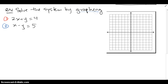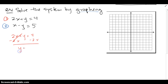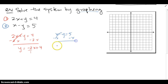Now let's solve the system by graphing. I'm going to graph each equation in y = mx + b (slope-intercept form) by isolating y, because that'll give me an accurate graph. The first equation gives y = -2x + 4, so it has a slope of -2 over 1 and a y-intercept of 4. For the second equation, x - y = 5, I subtract x from both sides to get -y = -x + 5, then divide by -1 to get y = x - 5, so the slope is 1 over 1 and the y-intercept is -5.